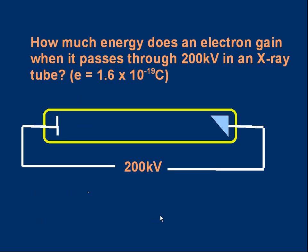Okay here's a problem for you to solve. How much energy does an electron gain when it passes through 200 kilovolts in an x-ray tube? And you're told the elementary charge. And there's a little diagram representing an x-ray tube. You don't really need to know how it works but just pause the video, have a think about that and see if you can work out how much energy the electron gains.